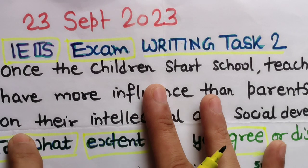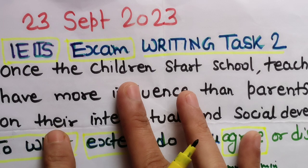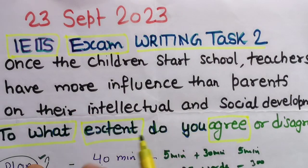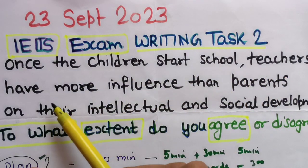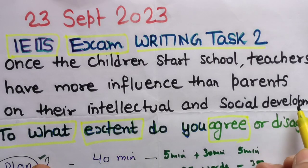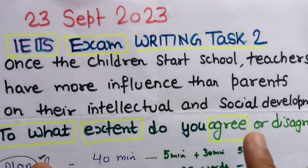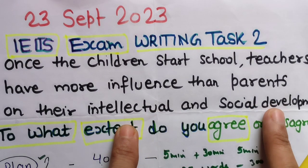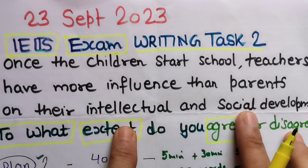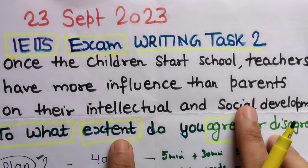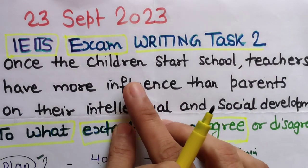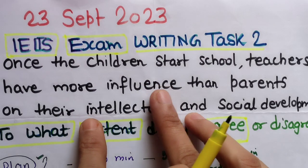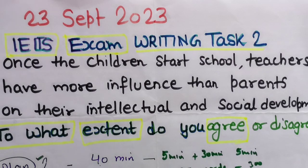To plan the essay, first you need to read the statement three or four times. Do not immediately start brainstorming or writing — after reading once, analyze the statement; that is more important. Read with me and analyze: 'Once the children start school, teachers have more influence than parents on their intellectual and social development.' Intellectual means intelligence, knowledge about academic subjects; social development means social skills like behavior, leadership, cooperation, teamwork.